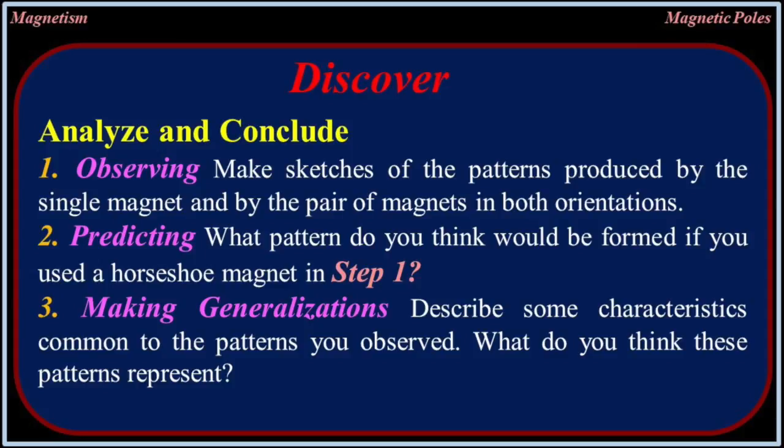Observing: make sketches of the patterns produced by the single magnet, then by a pair of magnets in both orientations. Predicting: what pattern do you think would be formed if you used a horseshoe magnet in step one? Making generalizations: describe some characteristics common to the patterns you observe. What do you think these patterns represent?